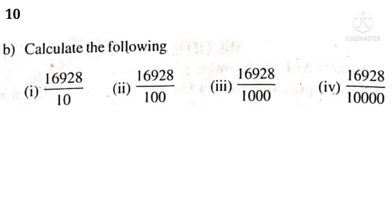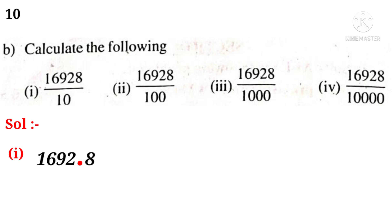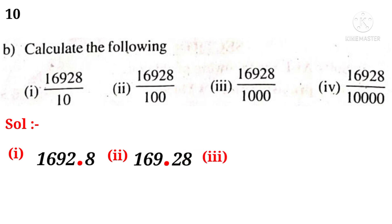Now, 10b. Calculate the following. Solution 1: write the number in the numerator 16,928. Observe that there is only one zero in the denominator. So, put a decimal point counting from right side to left side after one digit. That is 1692.8. Solution 2: observe that there are two zeros in the denominator. So, put a decimal point after two digits. That is 169.28. Solution 3: observe that there are three zeros in the denominator. So, put a decimal point after three digits. That is 16.928.